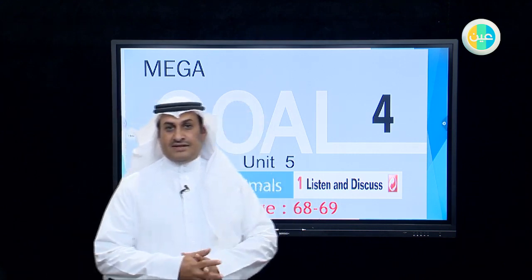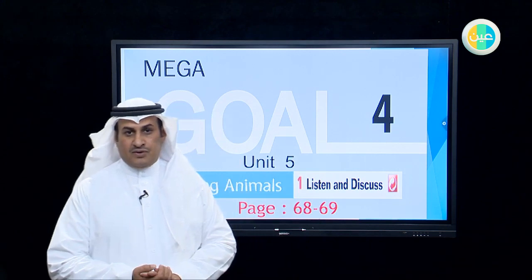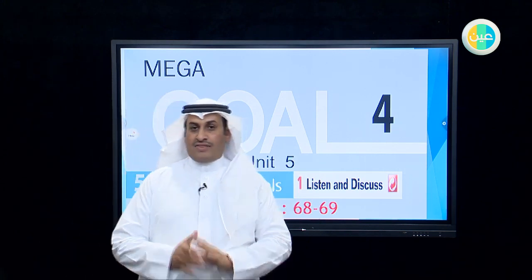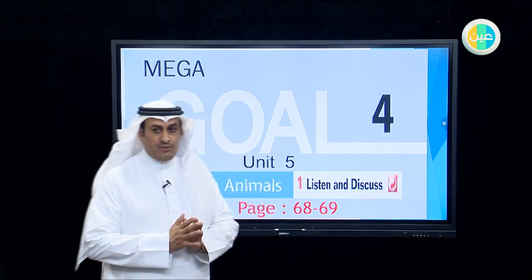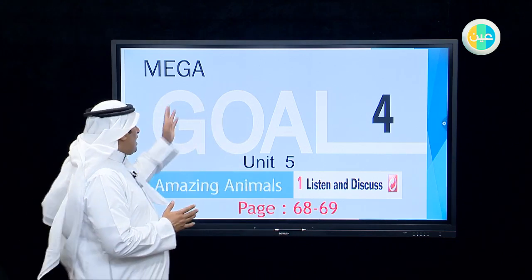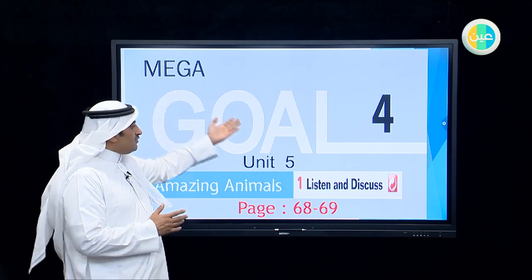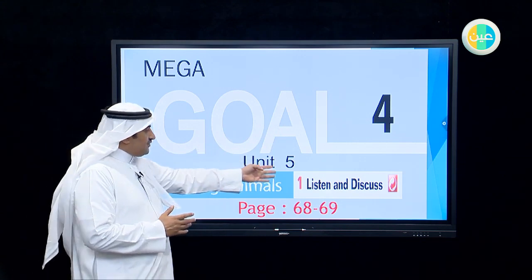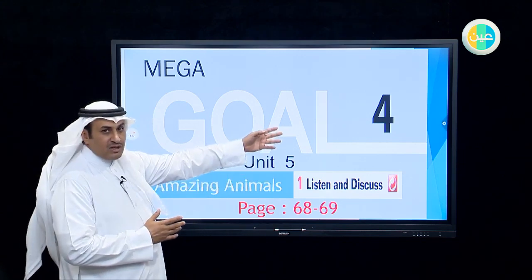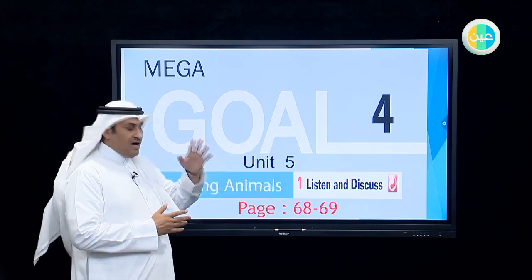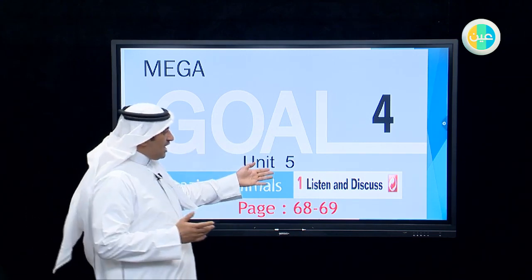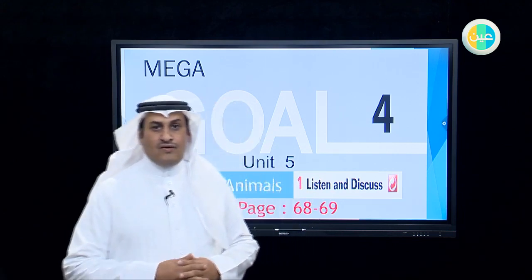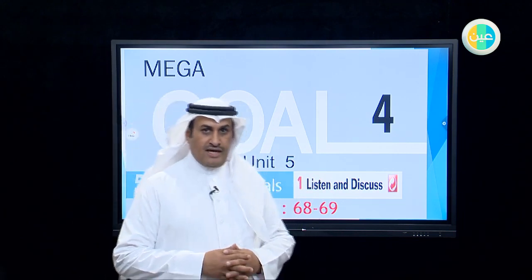This is the lesson for Megagol 5, which is talking about amazing animals. The syllabus is referring to Megagol 4, Unit 5. We have Megagol 4, Unit 5 here — Amazing Animals. We have to listen and discuss the first section of Unit 5 in Megagol.